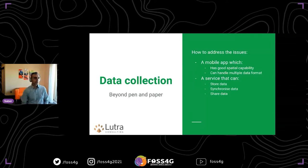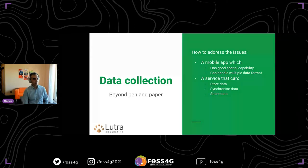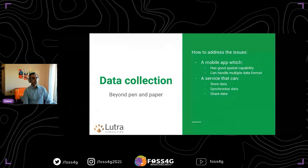To address these issues, we started with a mobile app which can support multiple spatial datasets, has a map view so you can see where you are, uses mobile hardware like camera and GPS, and the app should be able to handle multiple file formats. In addition to that, for data transfer and collaboration, we thought of a service that can store, synchronize, and share data.